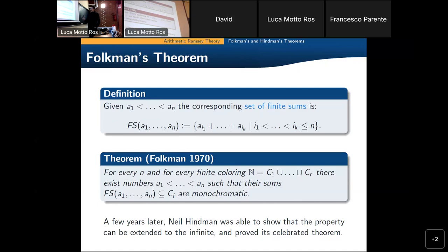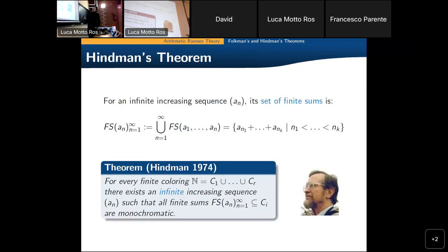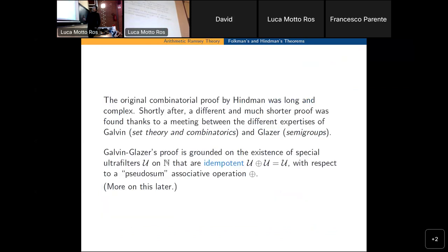Hindman proved that one can actually find an infinite sequence so that all possible sums taken from that infinite sequence of distinct elements belong to the same piece of the partition. This was and is now one of the cornerstones of this area of research. The original proof was combinatorial and complex, but pretty soon another different proof was found by using ultrafilters, and that was the start of the whole area of research devoted to the use of ultrafilters in Ramsey theory.